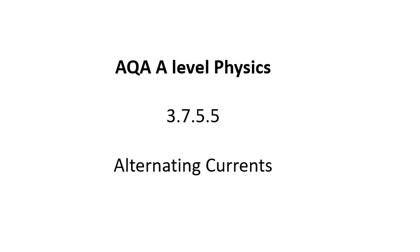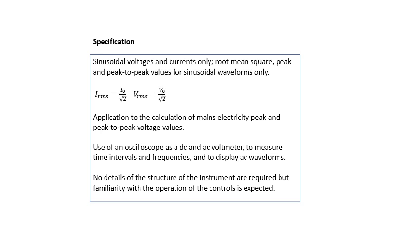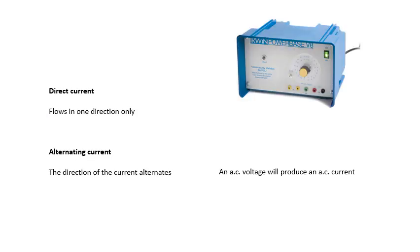AQA A-Level Physics, alternating currents. This bit of the specifications, what we're going to do now. Direct current (DC) and AC. Direct current flows in one direction only. Alternating current - the direction of the current alternates.